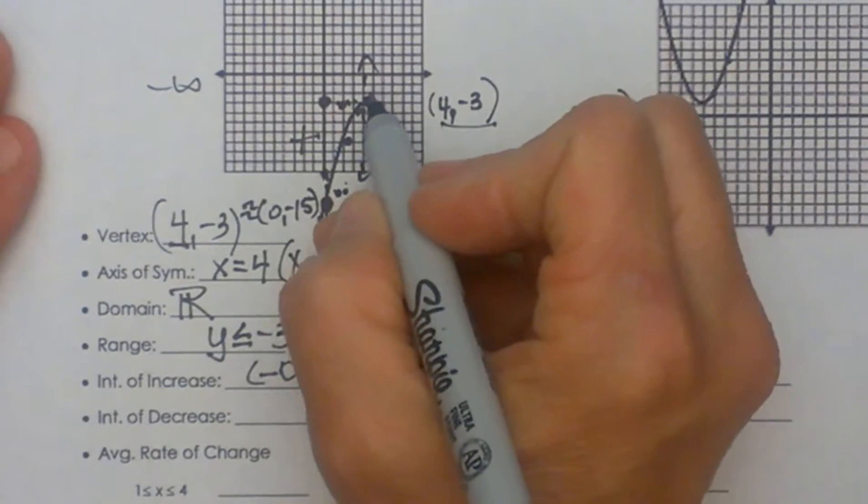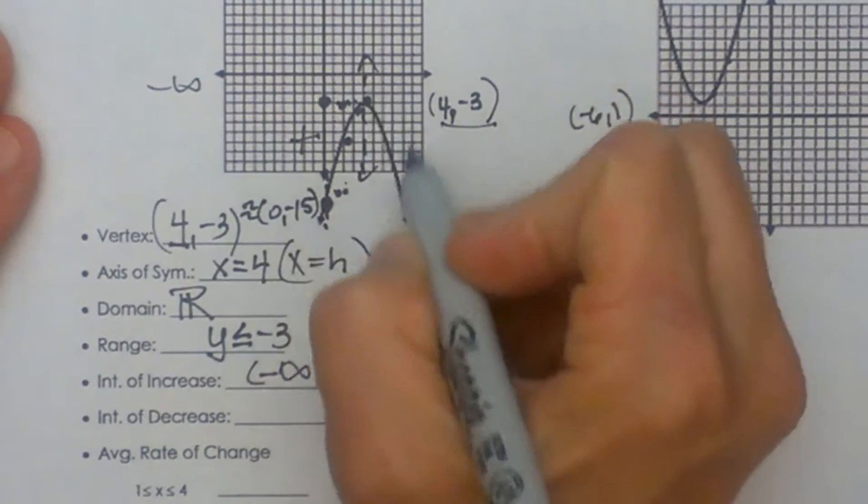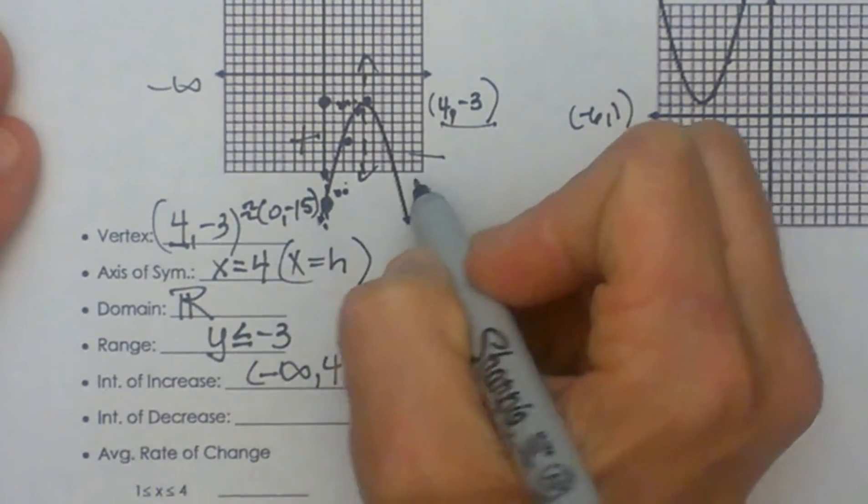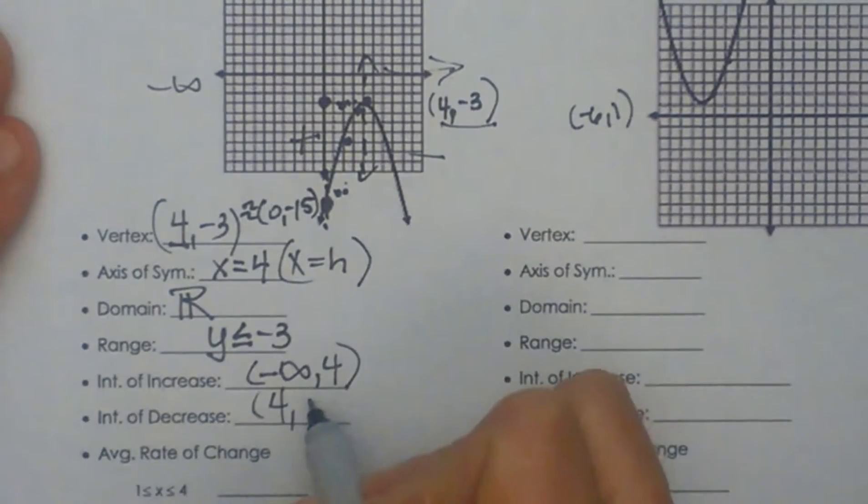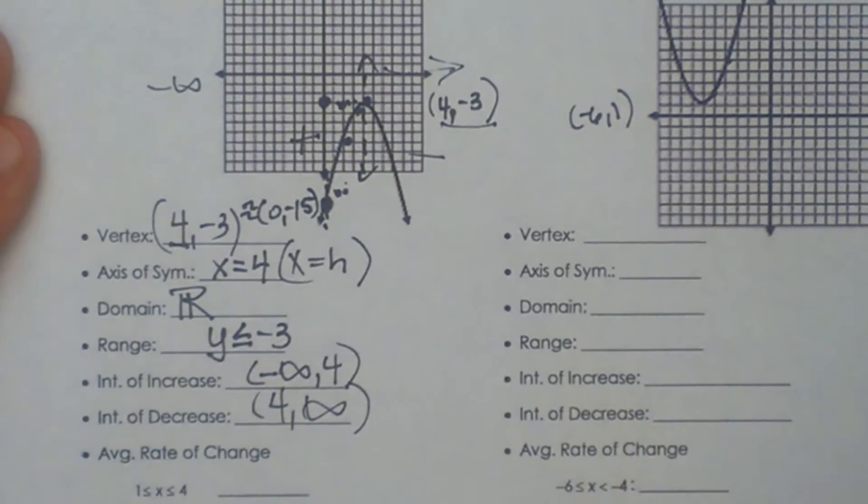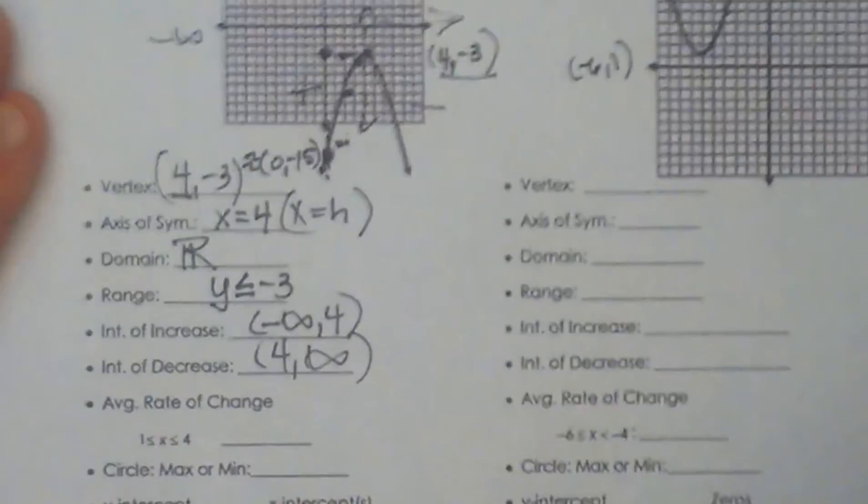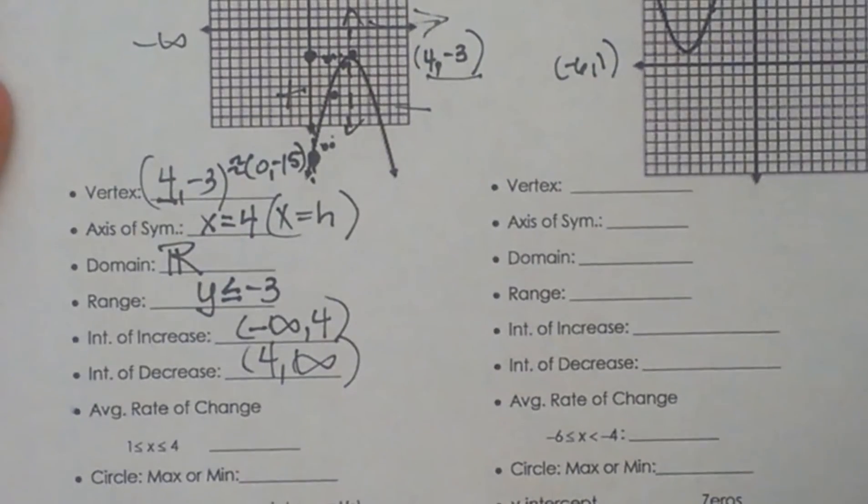Where does the graph decrease? It decreases from the vertex to the right. So that is from 4 and then all the x's to the right which is positive infinity. And that is how you find the interval of increase and decrease. Again you are reading it off of the x axis.